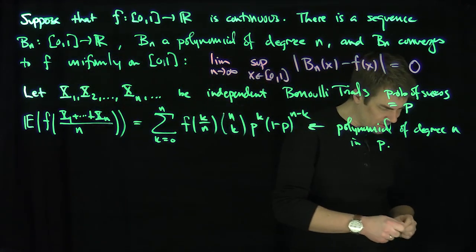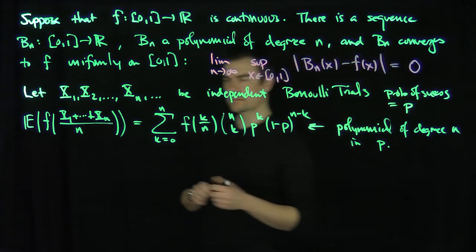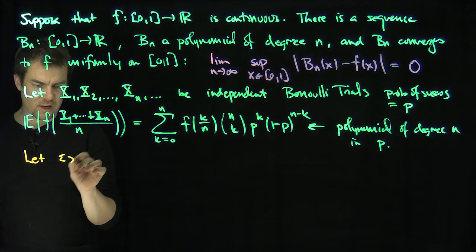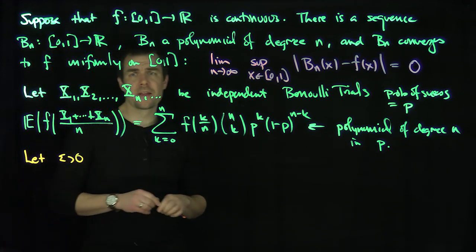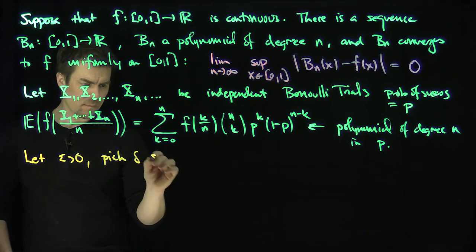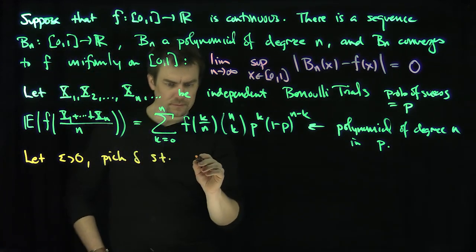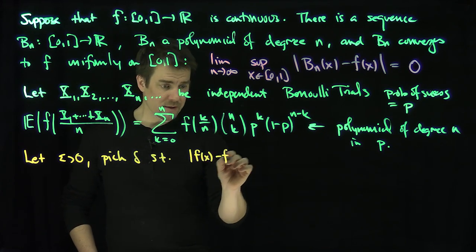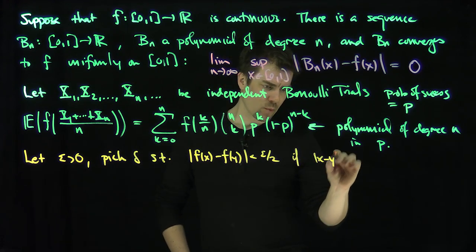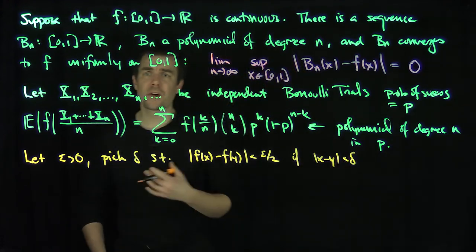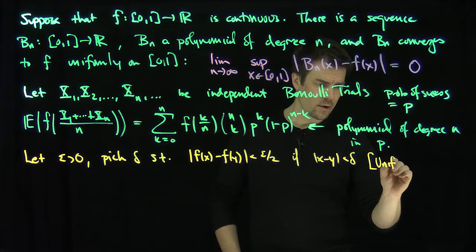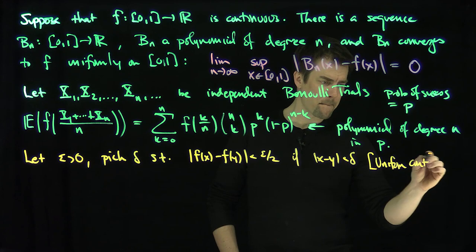So let epsilon be greater than 0. I can choose delta such that |f(x) - f(y)| is less than epsilon/2 if |x - y| is less than delta. This follows from uniform continuity of the function on the interval.